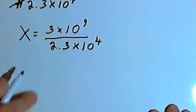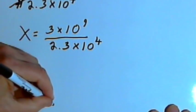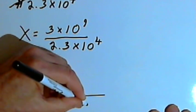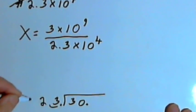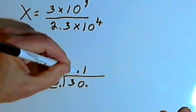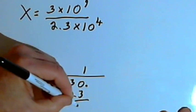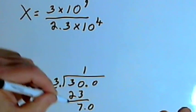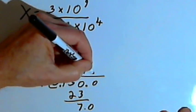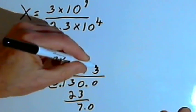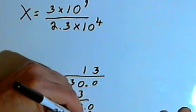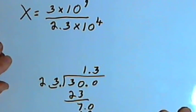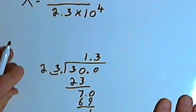2.3 divided into 3. I can move my decimal point over and make that the same as 23 divided into 30. 23 into 30 goes one time. 1 times 23 is 23. I subtract, I get a 7. I'll bring down a 0. 23 into 70 goes 3 times. And 3 times 23 is 69. I've got a remainder of 1. I could keep doing this, but since I was dealing with an approximate value of gold, I think I'll stop here and call that 1.3.